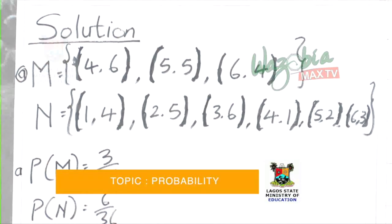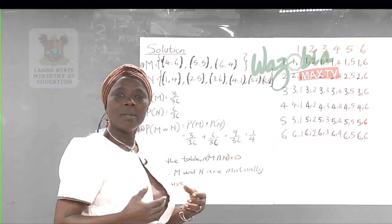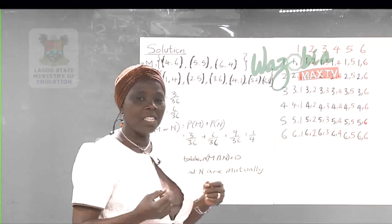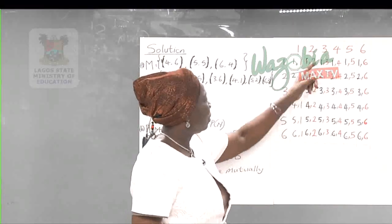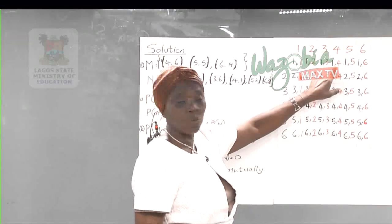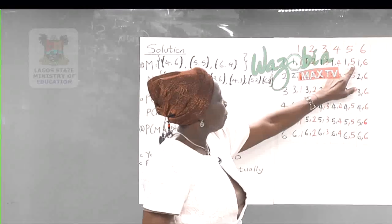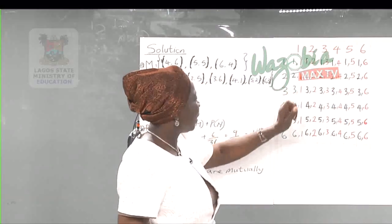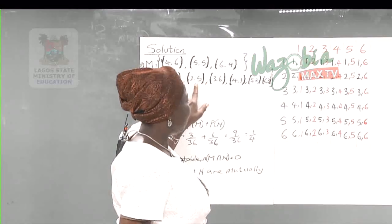For event N, the difference between the scores must be 3. Working through the sample space: 4 minus 1 gives 3, giving us (4,1); 2 minus 5 gives a difference of 3, giving (2,5) — wait, that's 5 minus 2 = 3, giving (5,2); and (3,6) where 6 minus 3 = 3.